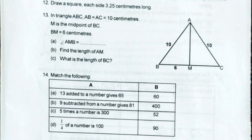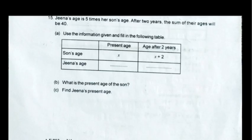Question 14. Match the following. A. 13 added to a number gives 65. B. 9 subtracted from a number gives 81. C. 5 times a number is 300. D. One-fourth of a number is 100. Options: 60, 452, 90. Answer: A. 52. B. 90. C. 60. D. 400.